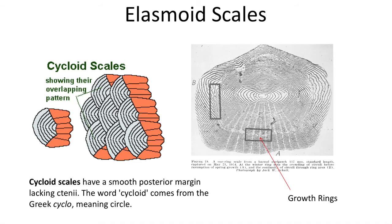The cycloid scales exhibit rings and show growth through the life of the fish, but they still protect the fish throughout its life. Trout and salmon have cycloid scales, which tend to be thinner than the ctenoid scales. The ringed cycloid scales can be used for seasonal isotopic studies of water temperature and chemistry, and can be used to age the fish.